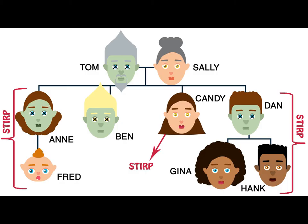Let's look at an example of Tom in order to determine how many stirpies he has. Tom and Sally had four children: Anne, Ben, Candy and Dan. Anne, Ben and Dan predeceased Tom. Candy is the only living child. Fred is the surviving child of Anne, and Gina and Hank are the surviving children of Dan. Tom will therefore have three stirpies. The first stirpy will be Anne and Fred, as Fred will move into the place of Anne. The second stirpy will be Candy. And the third stirpy will be Dan, Gina and Hank, as Gina and Hank will move into the place of their father. Ben, who predeceased Tom, does not count as a stirpy and has not left any descendants.